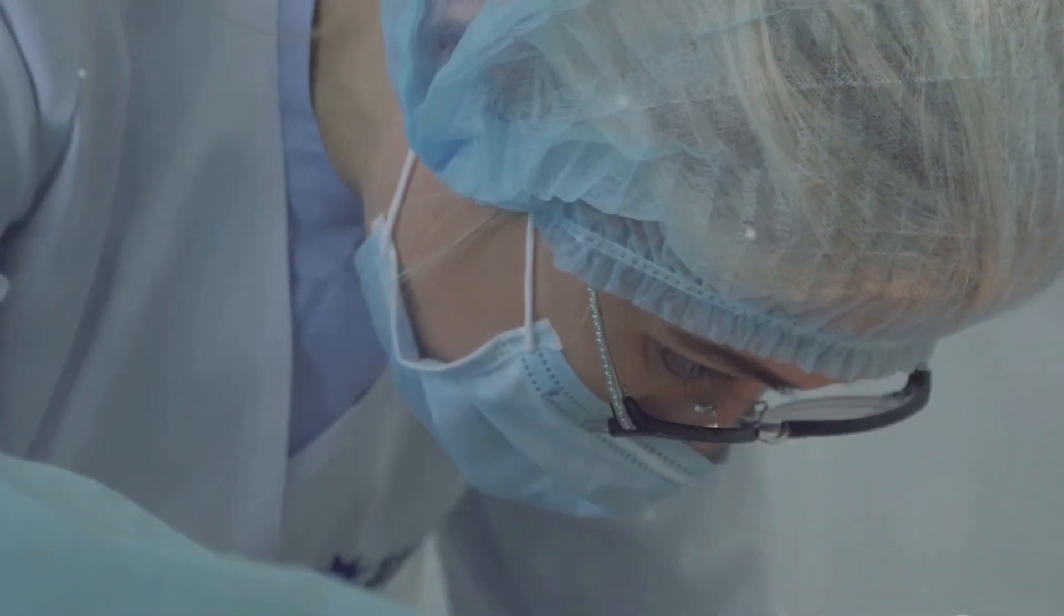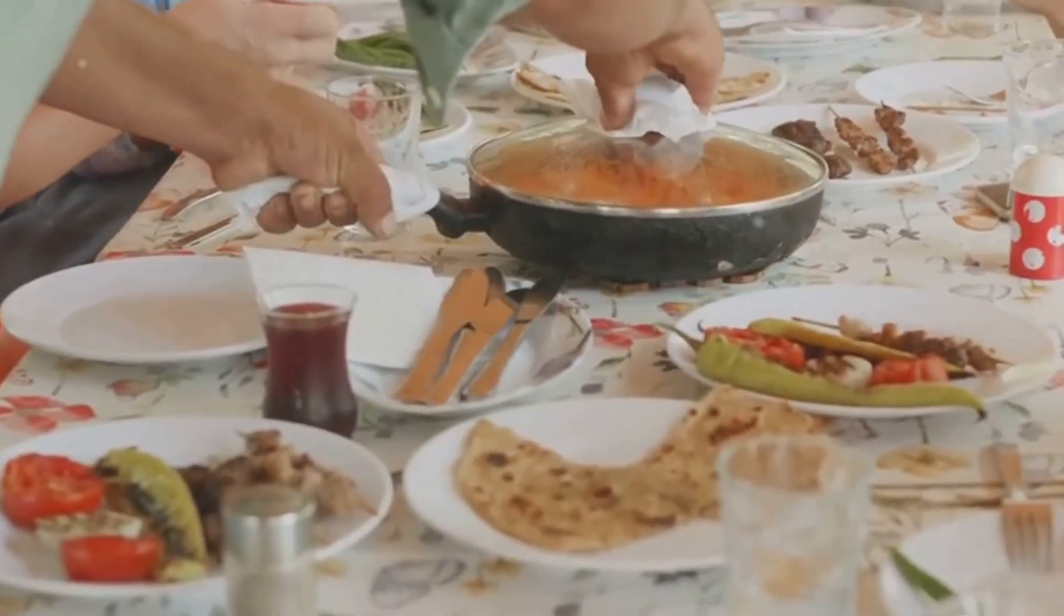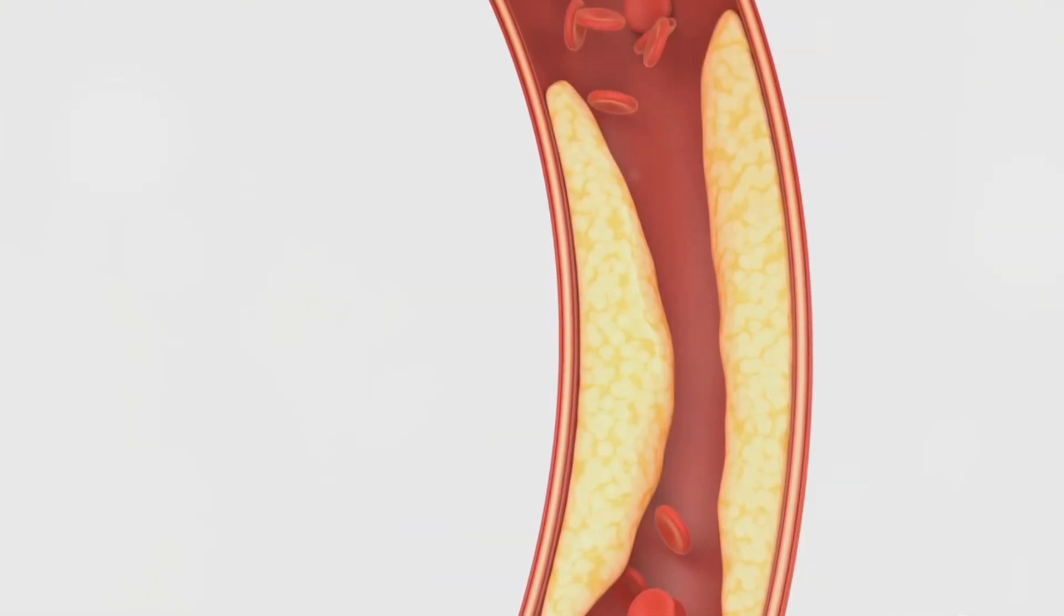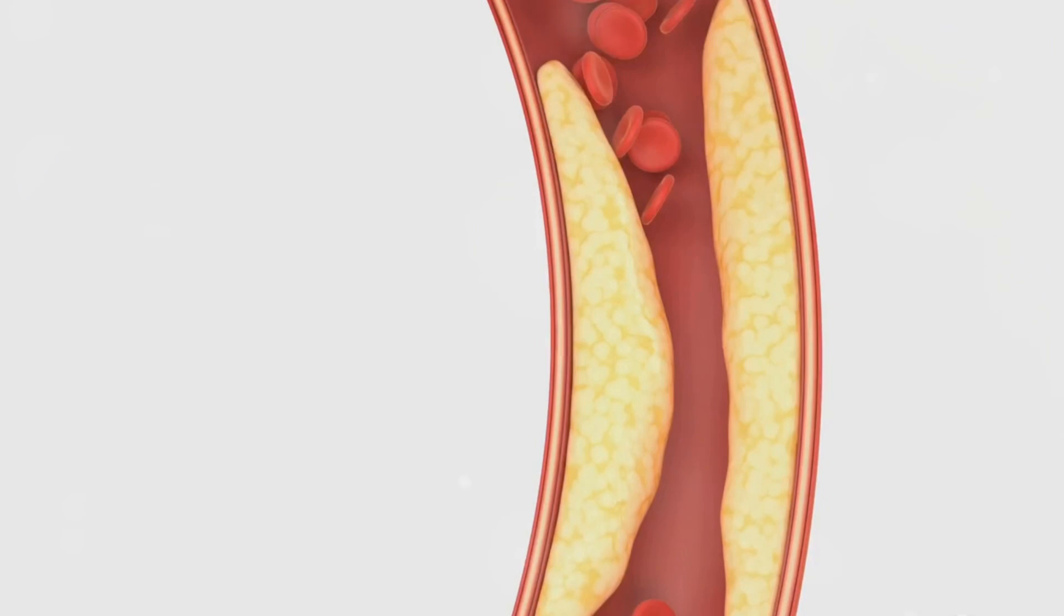Diet and xanthalasma - is there a link? What you eat directly impacts your cholesterol levels. A diet high in saturated and trans fats, often found in processed foods, fatty meats, and fried foods, can raise your LDL cholesterol. These unhealthy fats can contribute to plaque buildup in your arteries, increasing your risk of heart disease and xanthalasma.